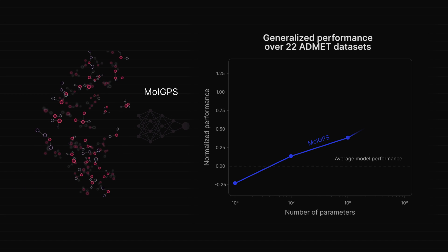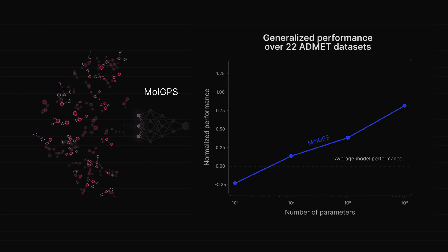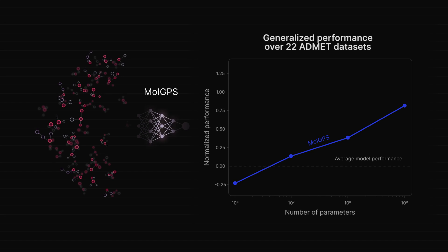When scaled to one billion parameters, MolGPS can outperform specialized models on various molecular property prediction tasks.